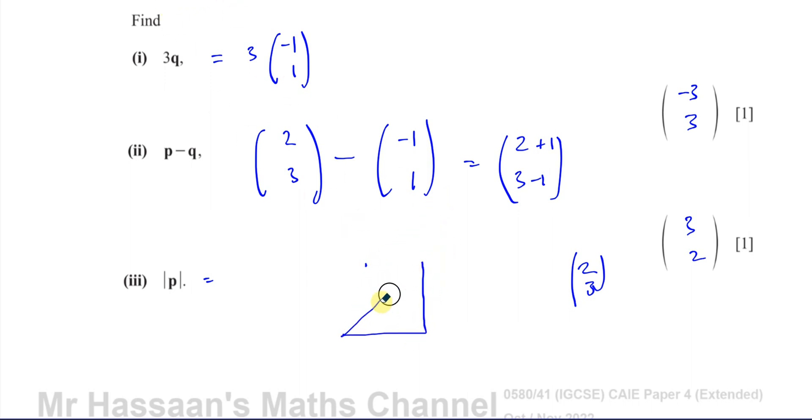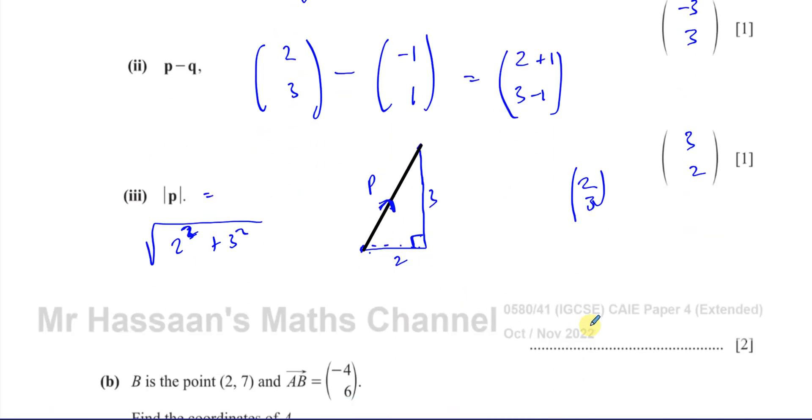And what you're looking for is the length of this line here. So you go 2 spaces to the right and then 3 spaces upwards. So you'd be looking for the length of this. This is the vector p here. This is just how to get from the start of p to the end of p. So basically what we're doing here to find the length of vector p is we need to use Pythagoras' theorem because this is a right angle. This is 2, this is 3.